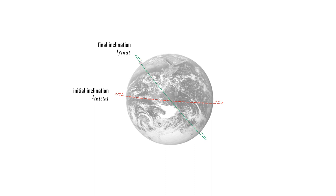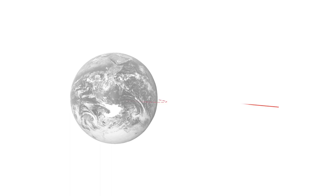The plane change maneuver is to be done on the line of intersection of the two orbital planes. The initial velocity and final velocity vectors are identical in magnitude but separated by an angle.